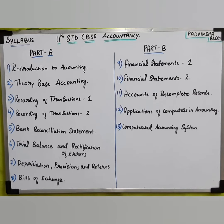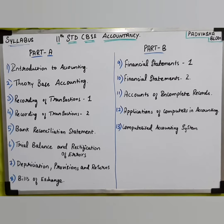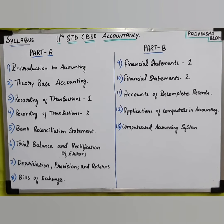Now for Part B, the chapters are: Financial Statements 1, Financial Statements 2, Accounts of Incomplete Records, Applications of Computers in Accounting, and Computerized Accounting System. We will first complete Part A videos and then move to Part B videos.